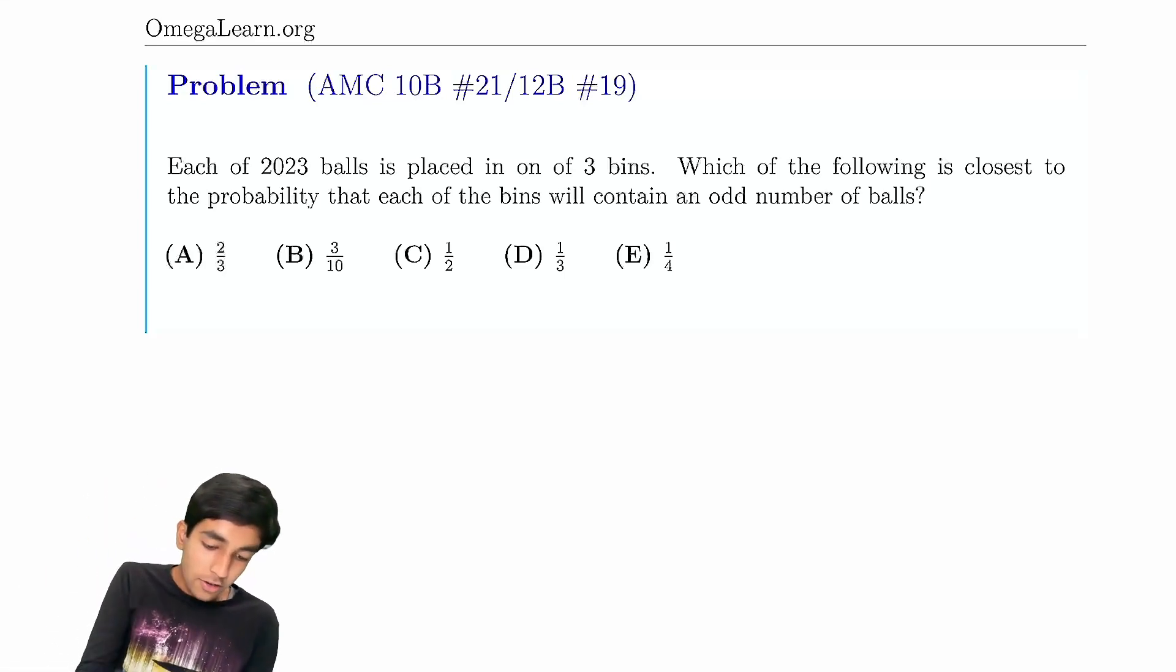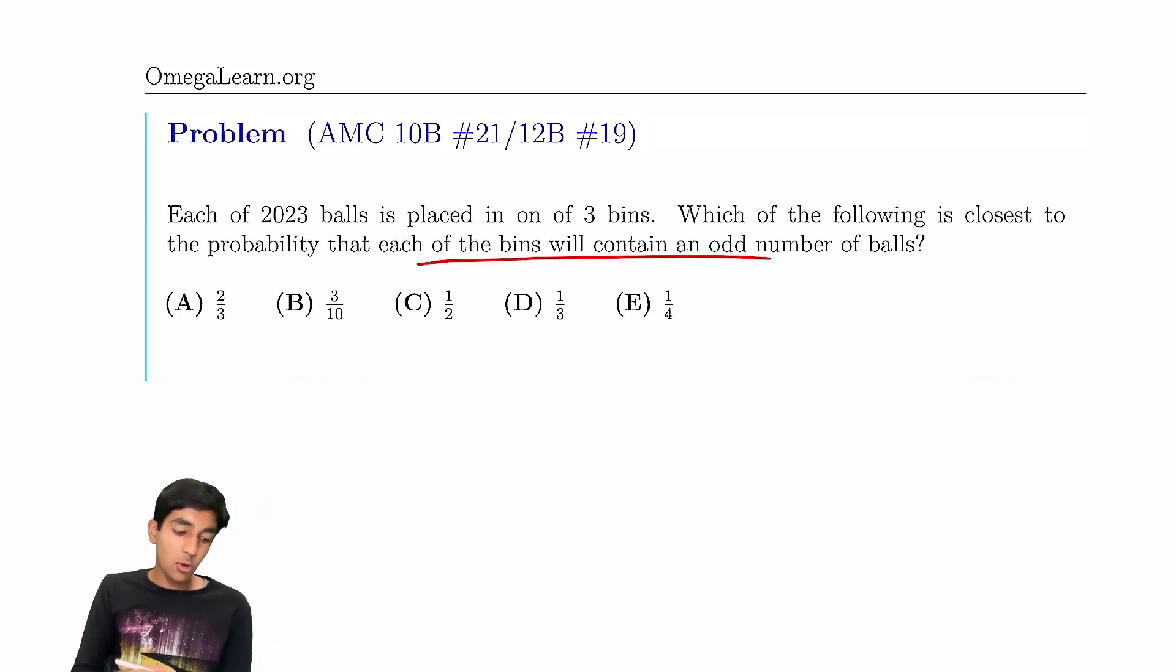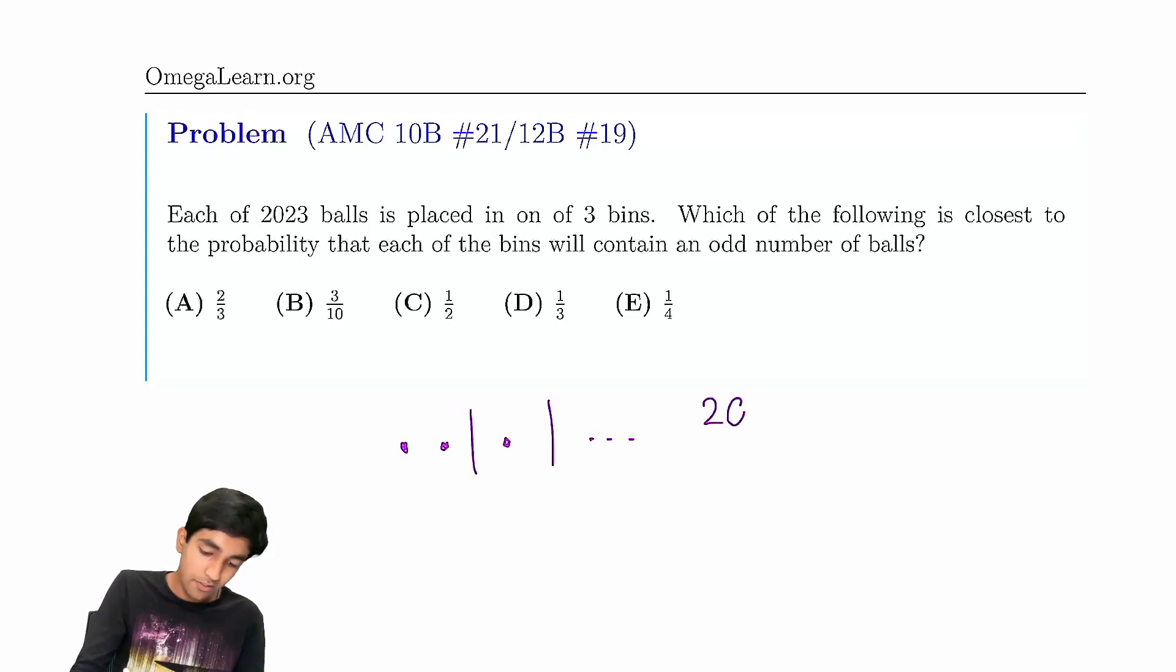So how do we do this? The first thing is to find the total number of ways 2023 balls can be placed into three bins. To do that, we just have 2023 balls, and then we put two bars. So that's just 2025 choose 2.